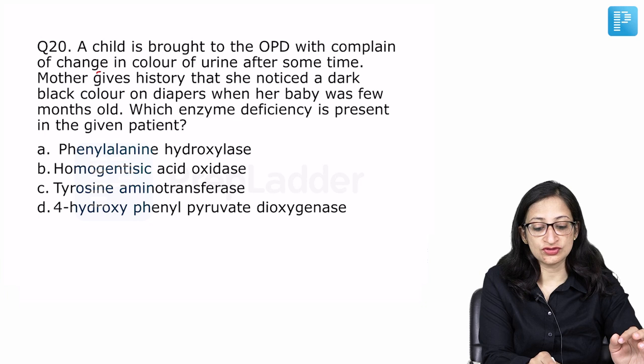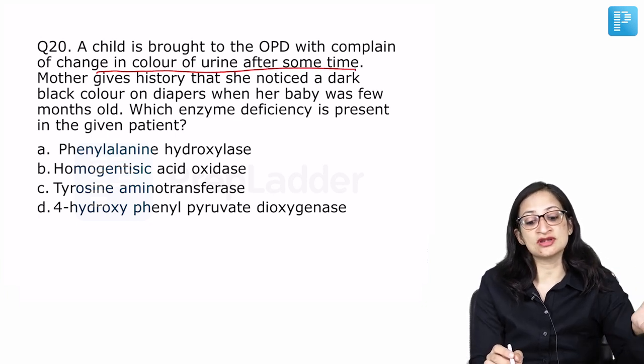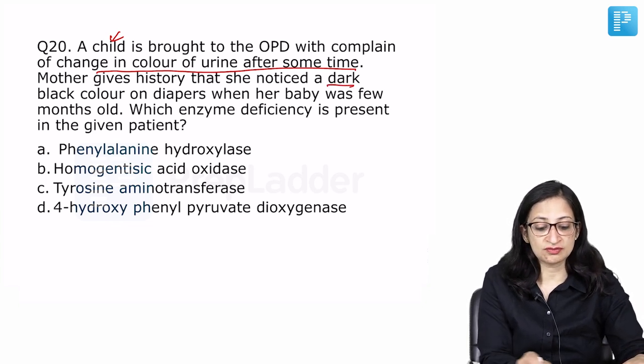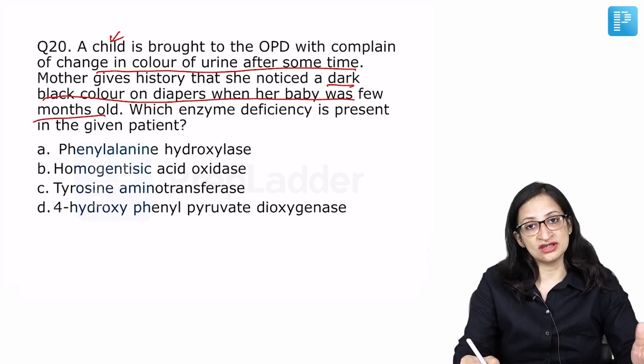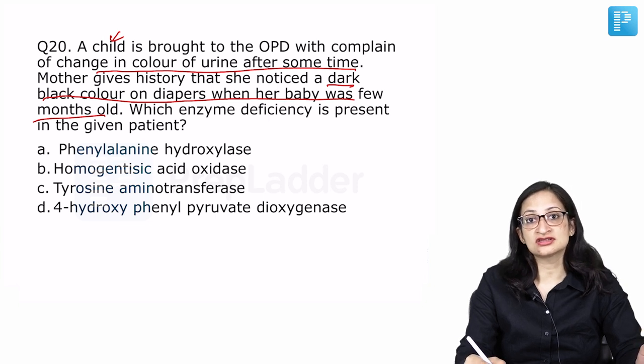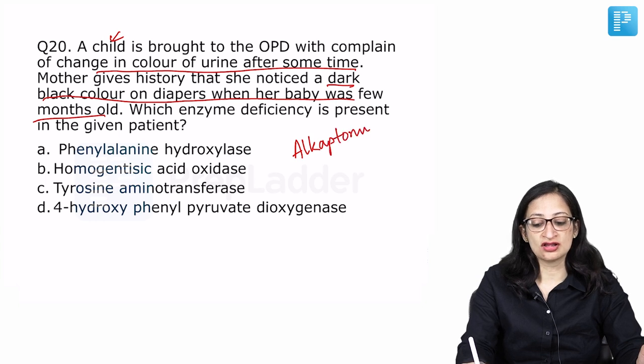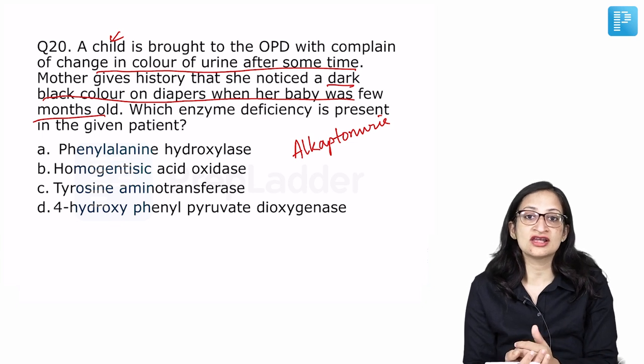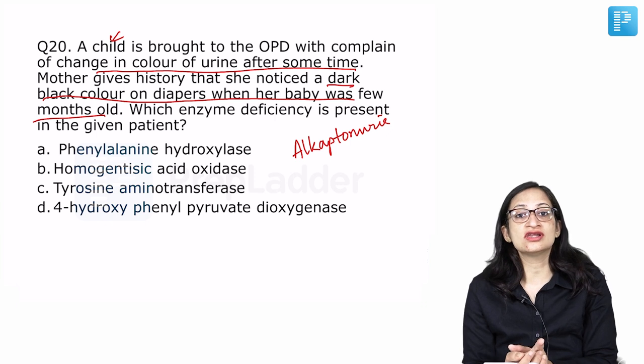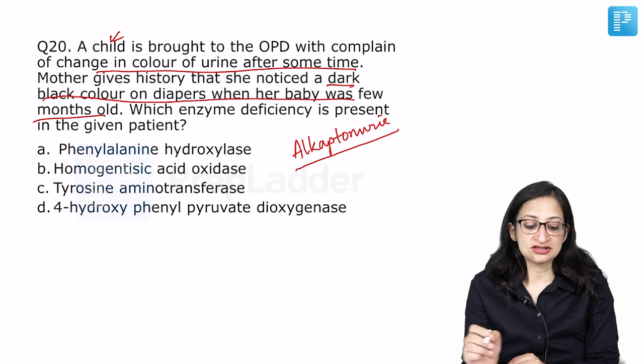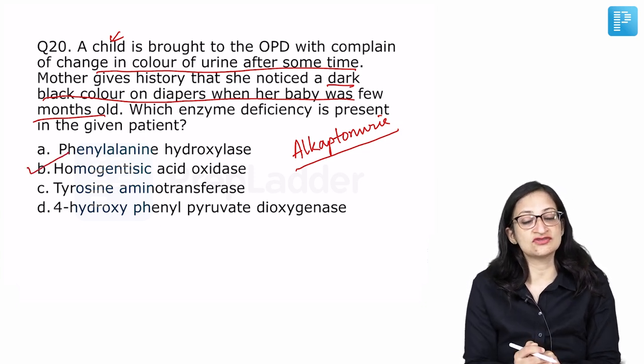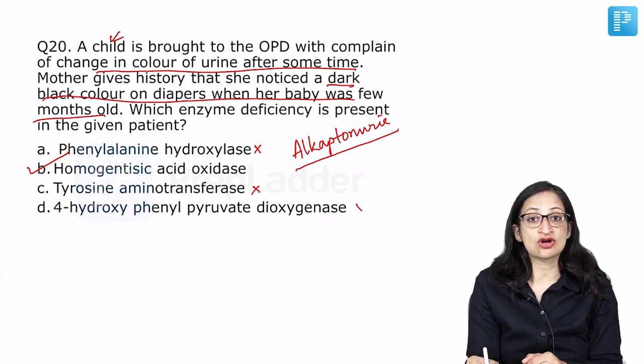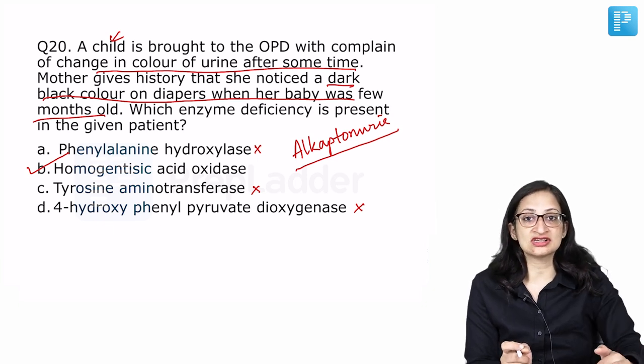A child is brought to OPD with complaints of change in color of urine after some time. There was a mixed school of opinion. Some students mentioned that this was probably an adult who presented with complaint of change in color of urine on standing. Mother gives a history that she noticed a dark black color on diapers when her baby was few months old. Anyways, whether it is an adult, whether it is a child, inborn error of metabolism, we have already discussed. This person is suffering from a disease called alcaptonuria where the urine turns black on standing and in adulthood, you can get ochronosis that means pigmentation on the sclera of the eye, on the ear cartilage and subcardiac valve involvement, arthritis and all can also be there. In children, the only complaint will be that the urine turns black on standing. Alcaptonuria is a disease we know where there is deficiency of the enzyme homogentisic acid oxidase and we have discussed it already. Phenylalanine hydroxylase is deficient in a disease called phenylketonuria. Tyrosine aminotransferase and 4-hydroxyphenylpyruvate dioxygenase are deficient in tyrosinemia. The best answer to this question is homogentisic acid oxidase.